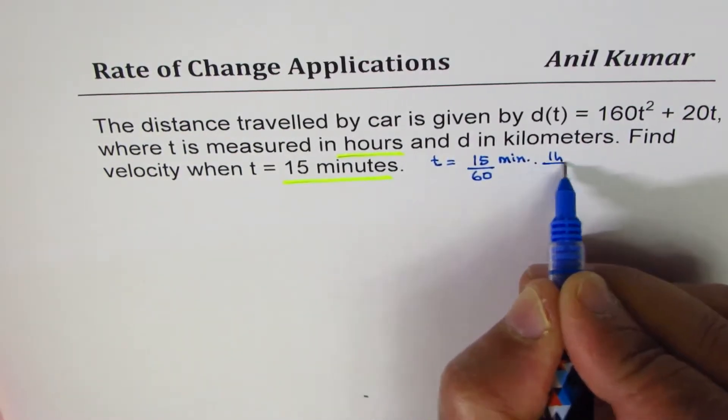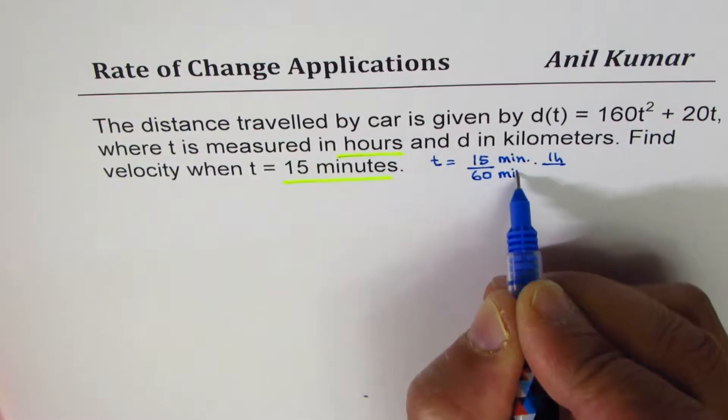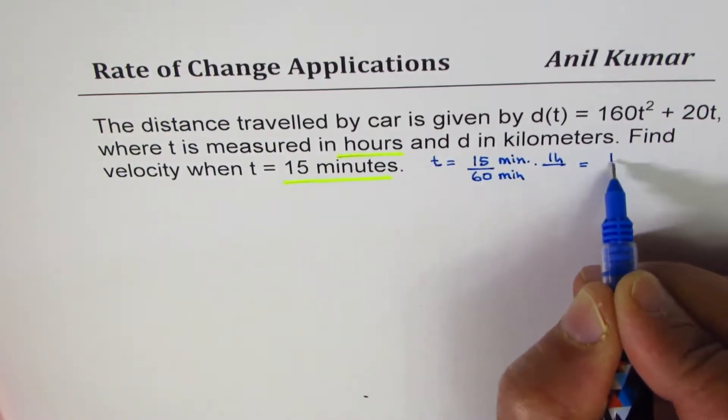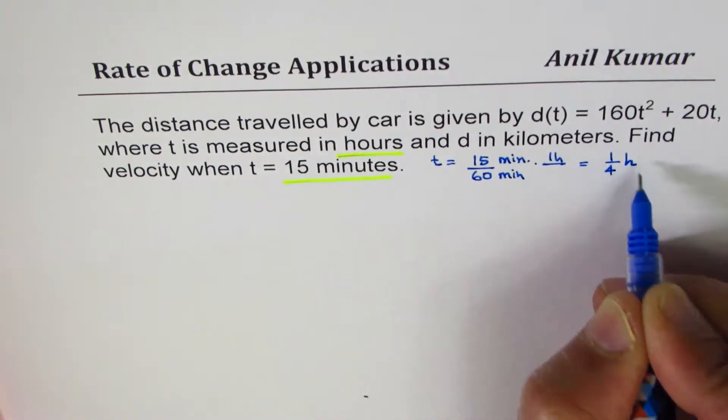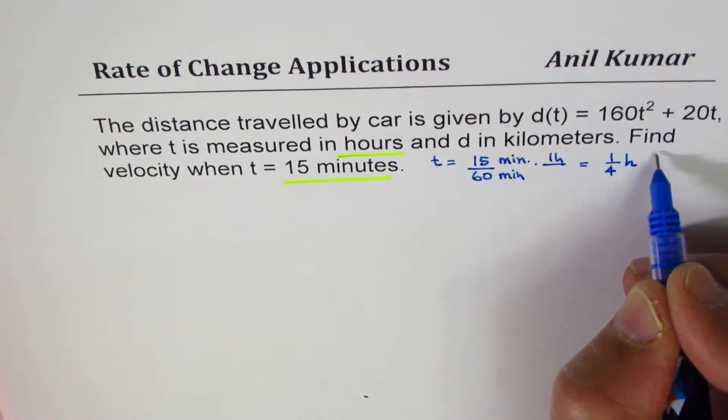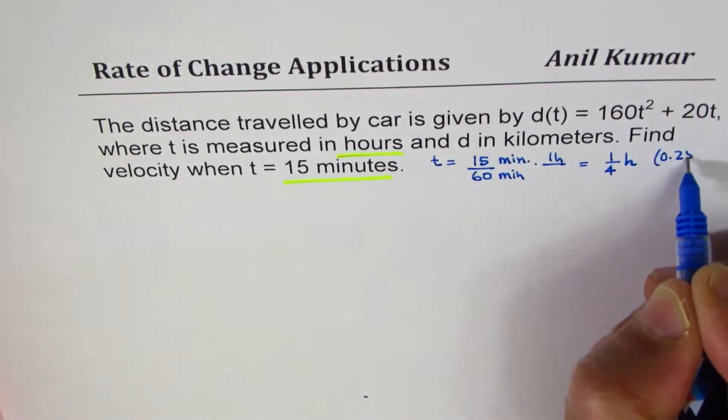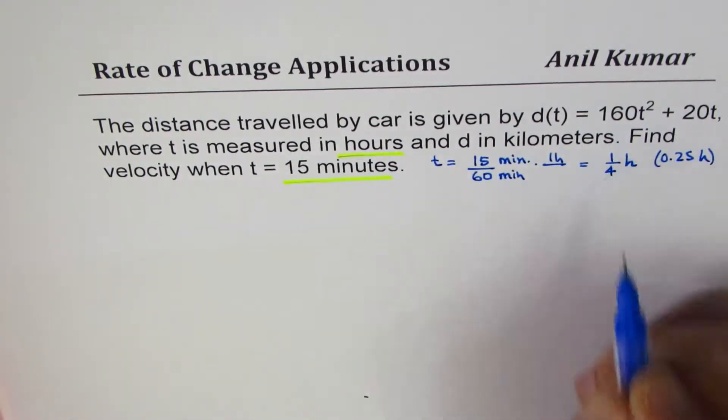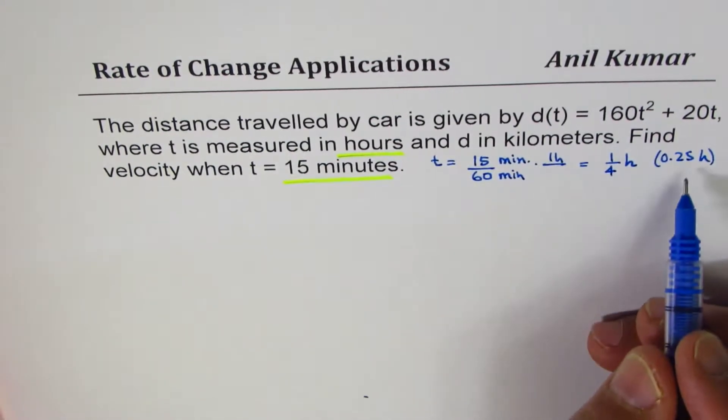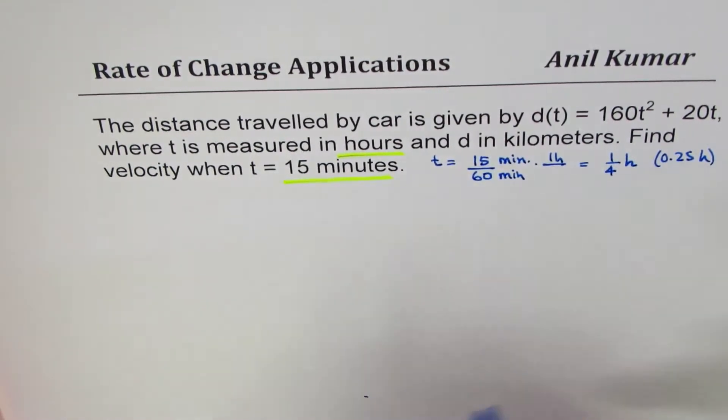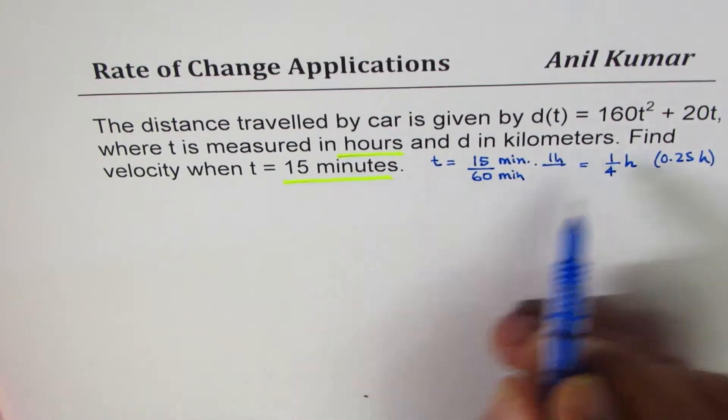Some of you may like to write 0.25 instead of 1 over 4 which is not a good practice. Imagine if I write this as 20 minutes, what do you get? You get a recurring decimal, right? So fractions is better, first thing to learn.